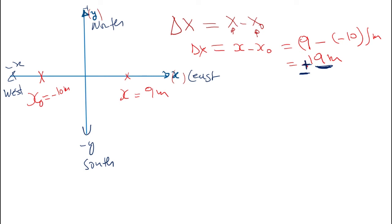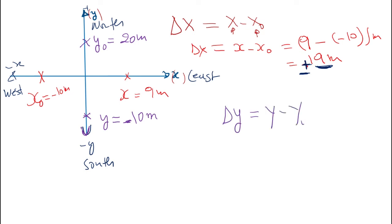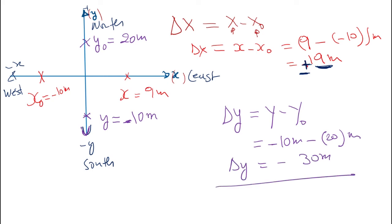Let's take a vertical axis example. Say the initial position is 20 meters north and the final position is negative 10 meters. The displacement delta y is the final position minus the initial position: negative 10 minus 20, which equals negative 30 meters. The negative sign means we are heading south, and the magnitude is 30 meters — so we went from north to south.